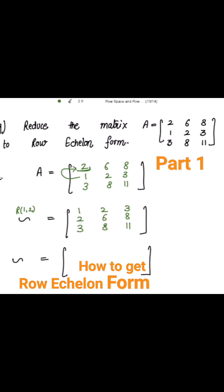Now I'm going to make this 2 and 3 to be 0, because I got this to be as my leading entry. That is the first non-zero entry as 1 in the first row.